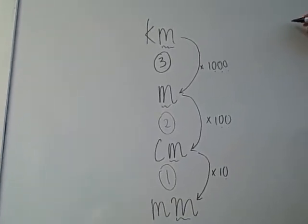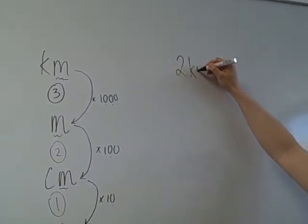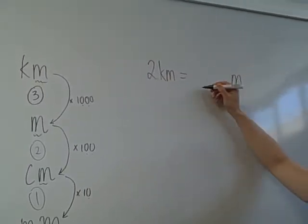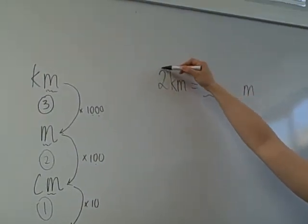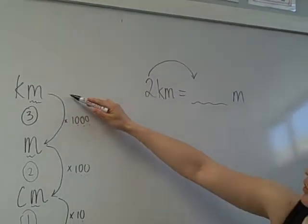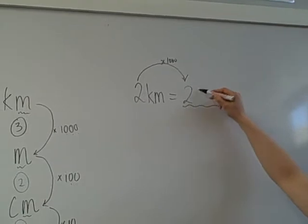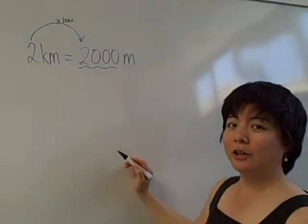So as an example, if I say 2 kilometres and I want to change it to metres, what I do is I take this number and I travel down this way, and I multiply by 1,000, so 2 times 1,000 is 2,000 metres. Pretty clear?